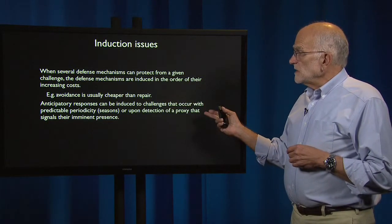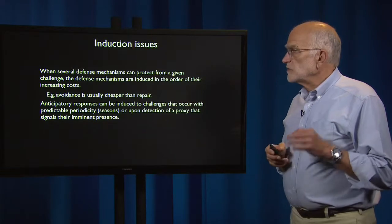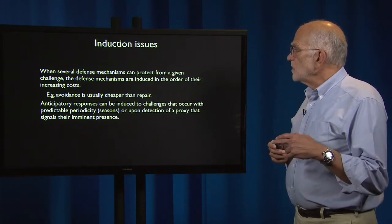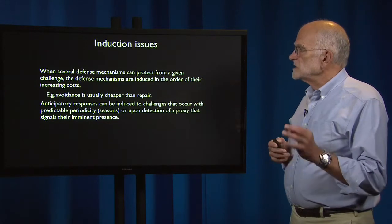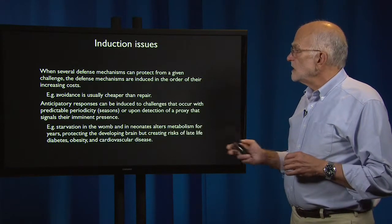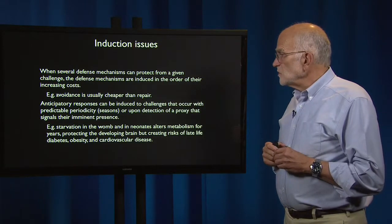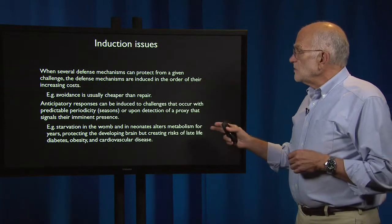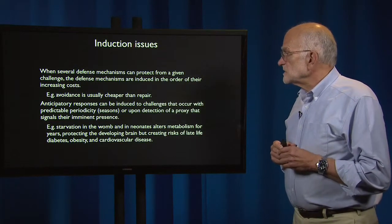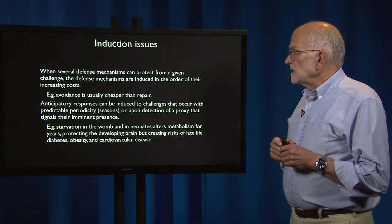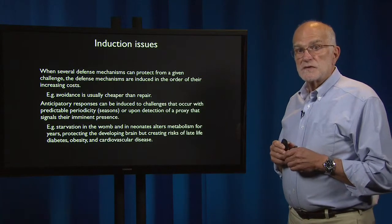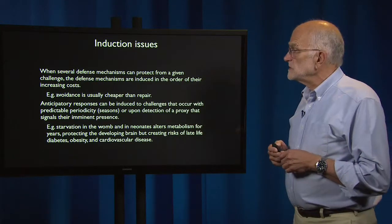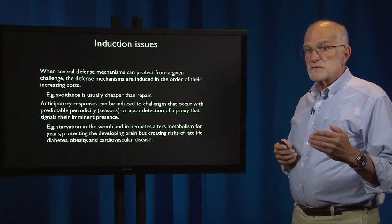Anticipatory responses can be induced for challenges that occur with predictable periodicity — for example, the seasons — or upon detecting a proxy that signals immediate presence. For example, starvation in the womb and in neonates alters metabolism for years, protecting the developing brain but creating risks for late-life diabetes, obesity, and cardiovascular disease. We saw that with DOHAD, the developmental origins of health and disease. This is an anticipatory response.